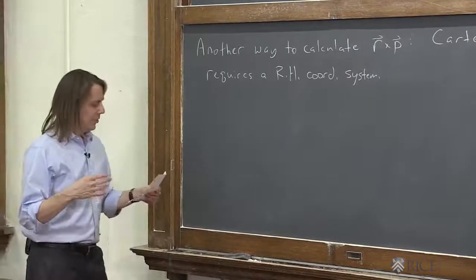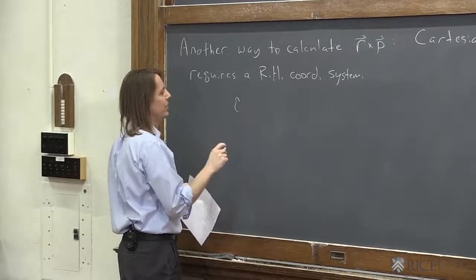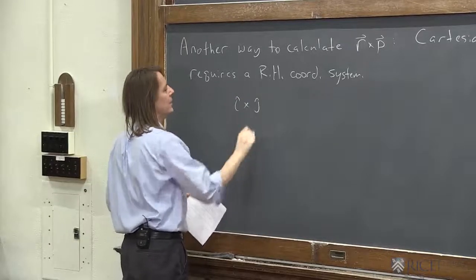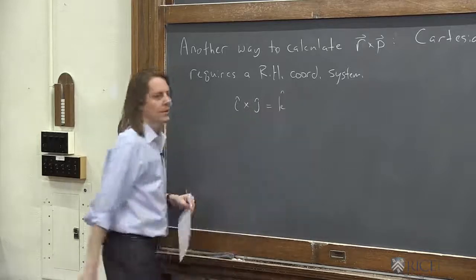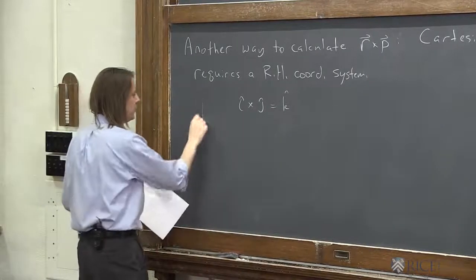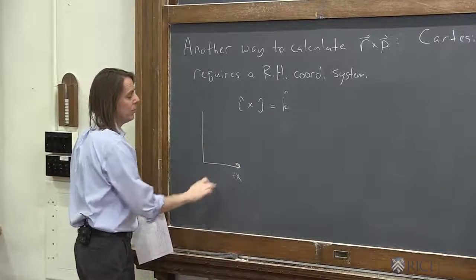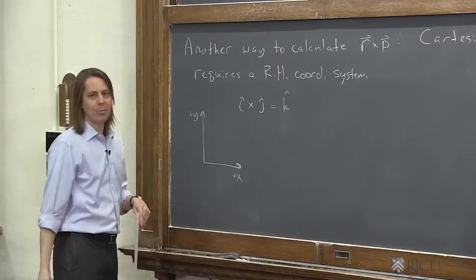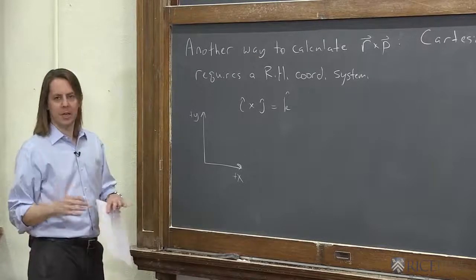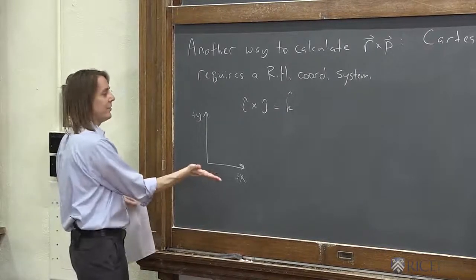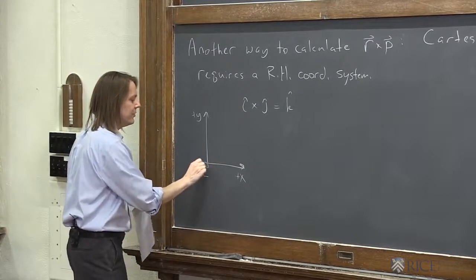To have all your cross products worked out you also have to have your coordinate system set up correctly. So remember i hat is the unit vector of the x axis. j hat is the unit vector of the y axis. i hat cross j hat has to equal k hat. And what this means is it's not arbitrary which way the z axis goes. Typically we put plus x to the right horizontal and we put plus y going up vertical. And you may say well z is into the board. I can make it either way. No, you can't. It has to be that i hat cross j hat is k hat. So if you draw it that way, z has to be, positive z has to be out of the board.